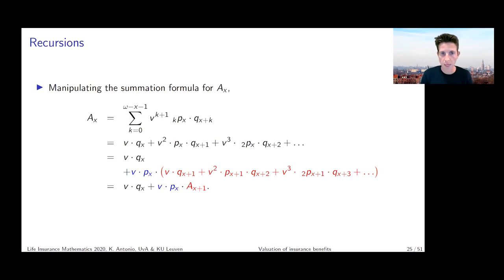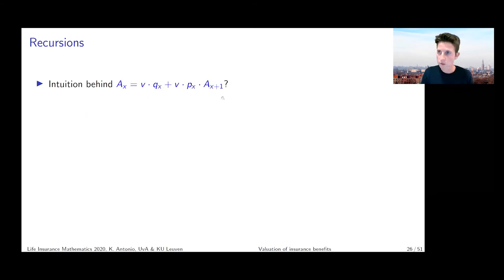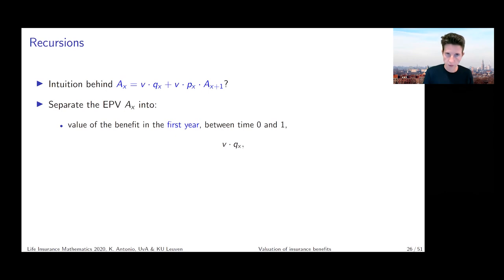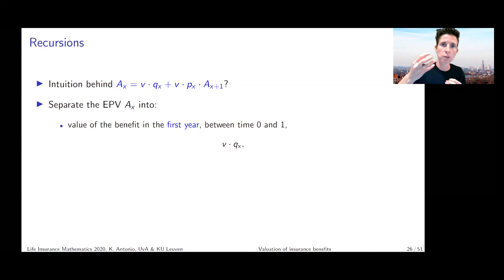This is a backwards recursion — we start from the formula for an x-plus-one-year-old and go back to the formula for an x-year-old. It's important to look at the summation formula carefully and make sense of these operations, because you will often need to play around with connections between valuation formulas for different policyholder ages. Now, what is the intuition behind this formula? The first term, v times q_x, is the expected present value of the benefit guaranteed in the first year.